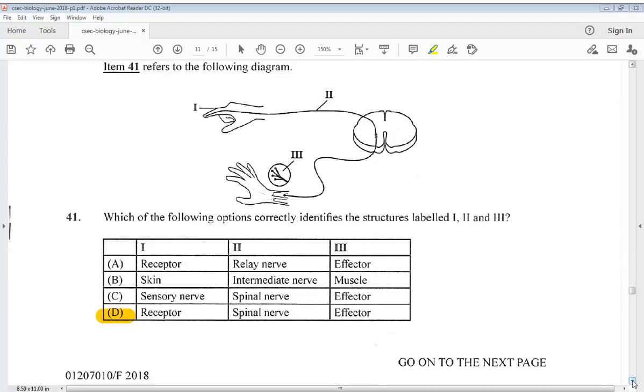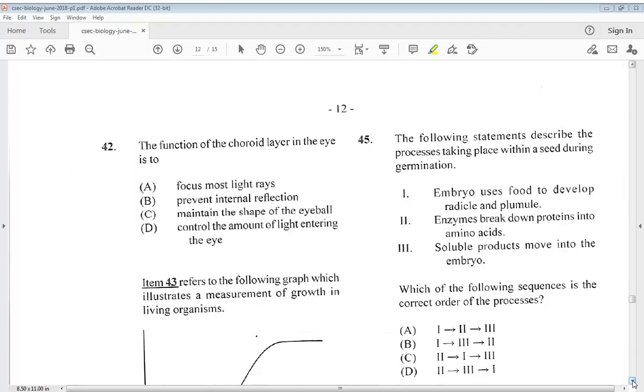Let's go to 42. The function of the choroid layer in the eye is: A. Focus most light rays. B. Prevent internal reflection. C. Maintain the shape of the eyeball. D. Control the amount of light entering the eye. So the answer would be B, prevent internal reflection.